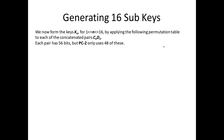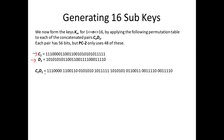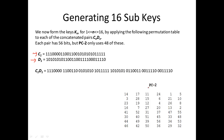After this, we take C1 D1 that we achieved, combine them, and rearrange the bits using a permutation table called PC2. After applying PC2, the number of bits is reduced to 48 and the order of bits is rearranged. It works similarly to PC1: go to the 14th bit in your input and make it the first bit in your output; go to the 17th bit and make it the second; and so on. The table has 8 numbers per column × 6 columns = 48 bits in the output.